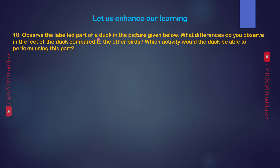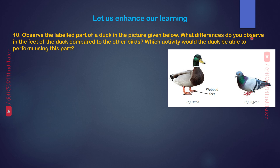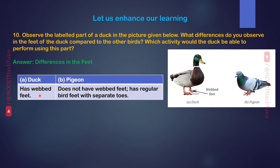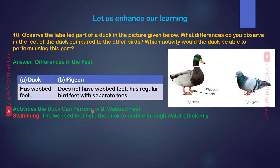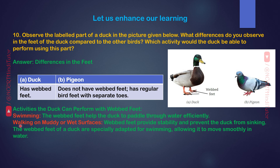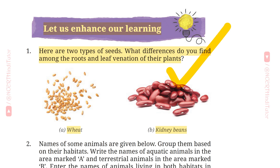Question 10. Observe the labeled part of a duck in the picture given below. What differences do you observe in the feet of the duck compared to other birds? Which activity would the duck be able to perform using this part? Answer. Differences in the feet: Duck has webbed feet; Pigeon does not have webbed feet and has regular bird feet with separate toes. Activities the duck can perform with webbed feet: Swimming — the webbed feet help the duck to paddle through water efficiently. Walking on muddy or wet surfaces — webbed feet provide stability and prevent the duck from sinking. The webbed feet of a duck are specially adapted for swimming, allowing it to move smoothly in water. Friends, we have completed all these questions and answers. Thank you for watching.